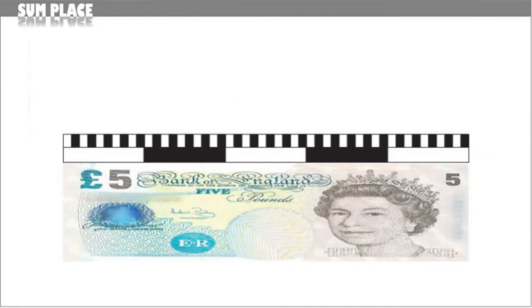An easy way of working this out is to use a number line, and this is a very good visual aid. It helps beginners develop a good feel for numbers, so we're going to use it to help work out what change you'll get.